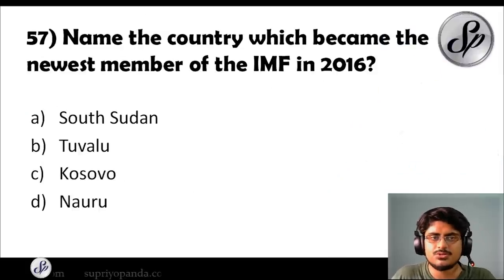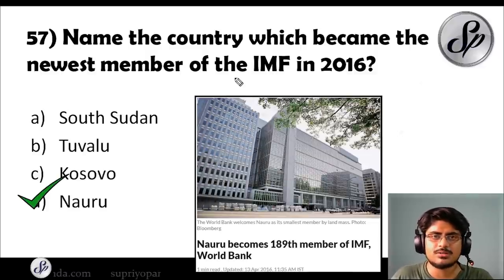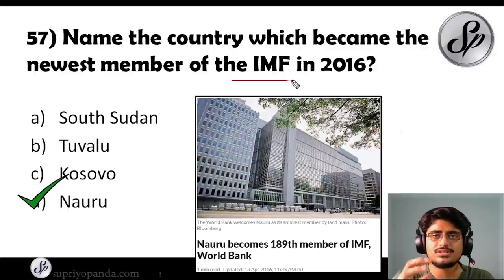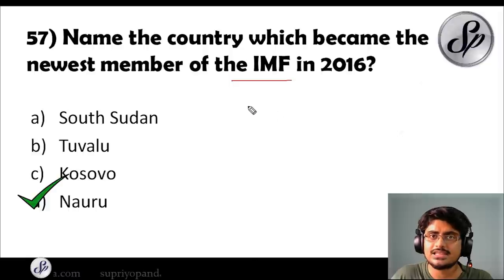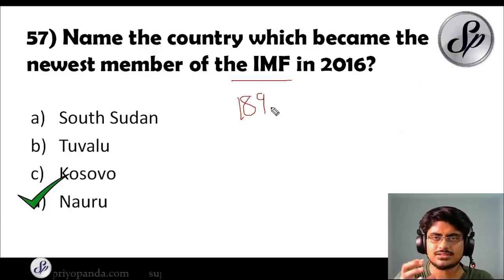Question fifty-seven: name the country which became the newest member of the IMF in 2016. The answer is Nauru — it became the 189th member of the IMF. Remember important things regarding multilateral organizations: the IMF's headquarters, who is its president or chairman, and the latest addition. The IMF and World Bank are sister organizations.